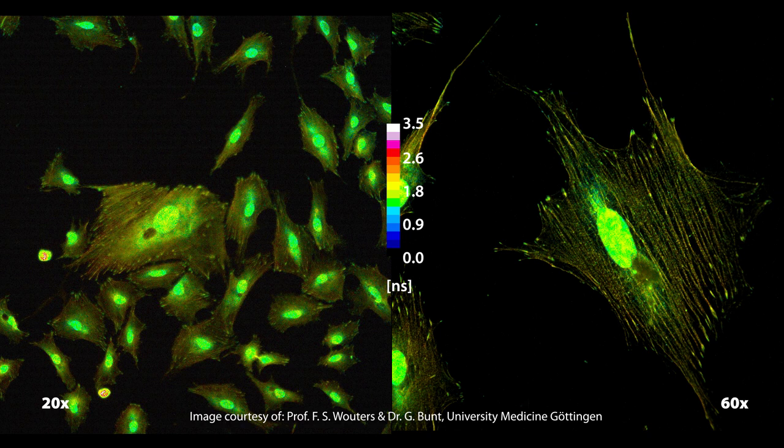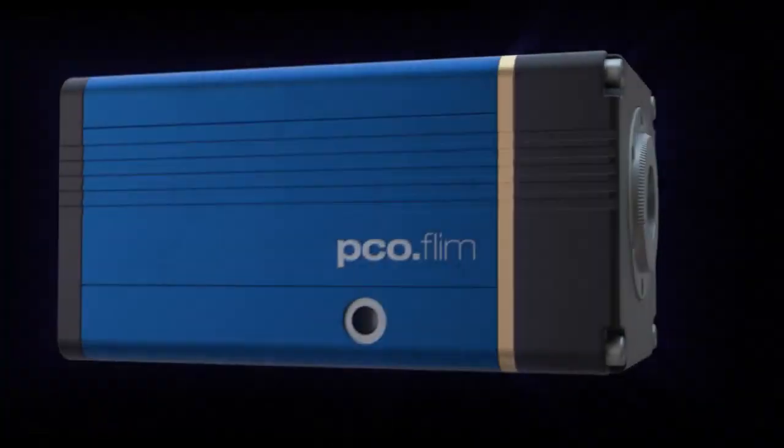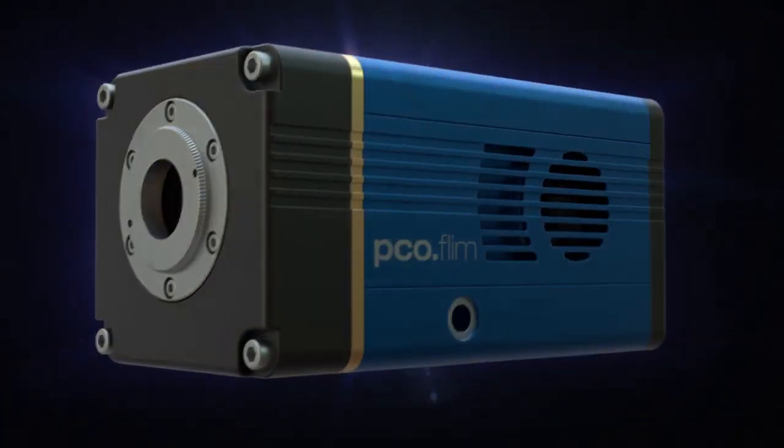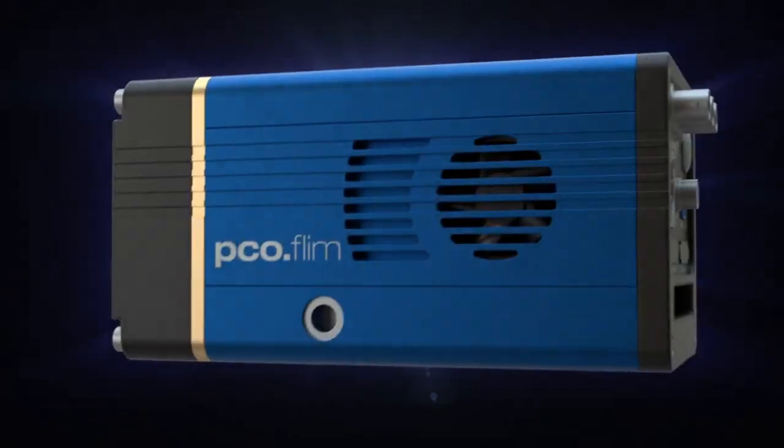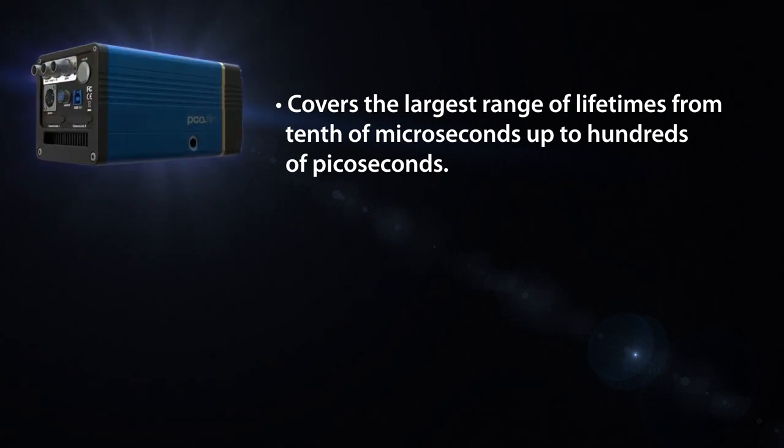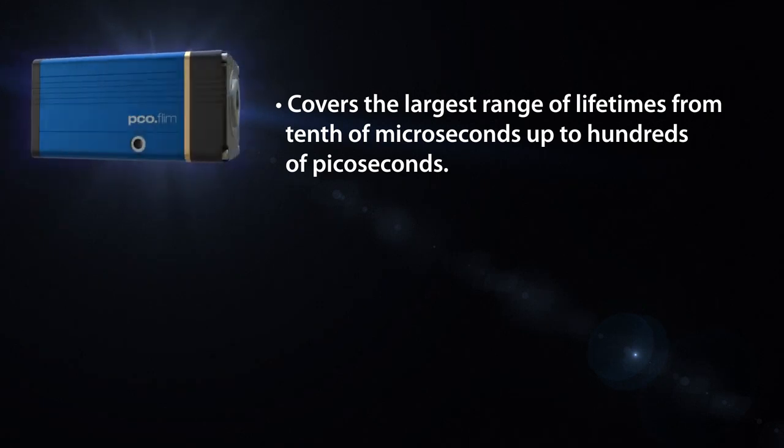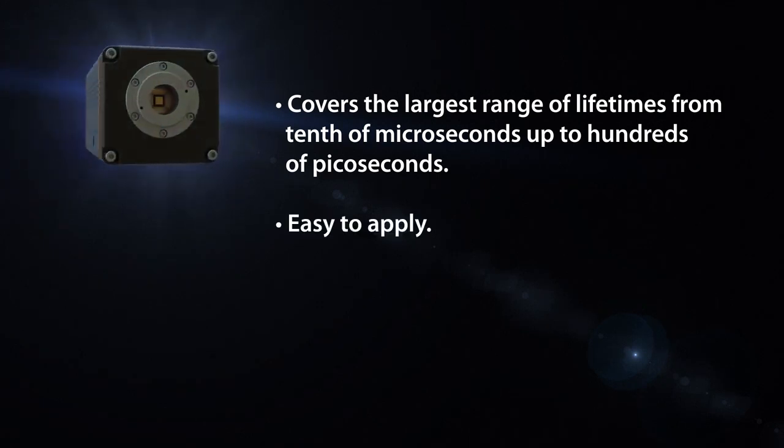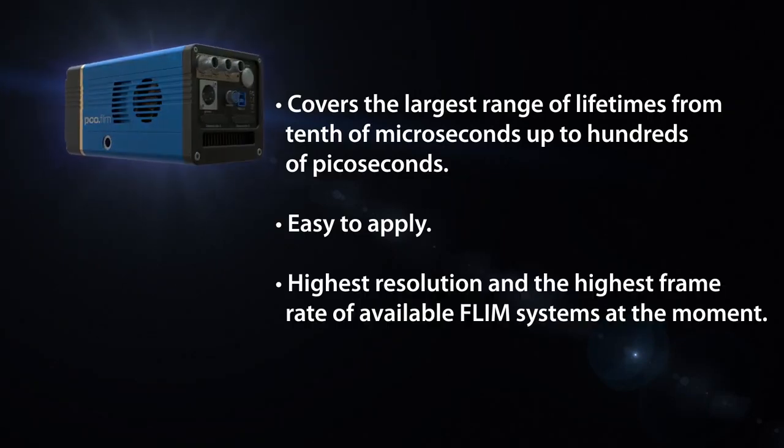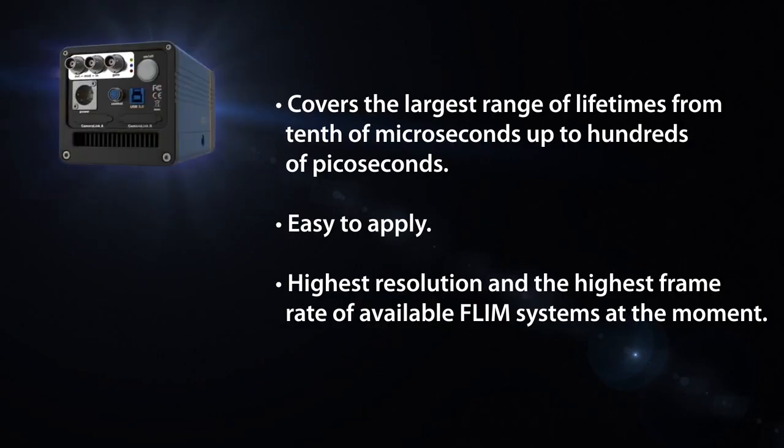It can be used for the measurements of a huge range of luminescence lifetimes from tenths of microseconds down to hundreds of picoseconds. The PCO frequency domain FLIM system is best in its class because it covers the largest range of lifetimes from tenths of microseconds up to hundreds of picoseconds. It's easy to apply. It has the highest resolution and the highest frame rate of the available FLIM systems at the moment.